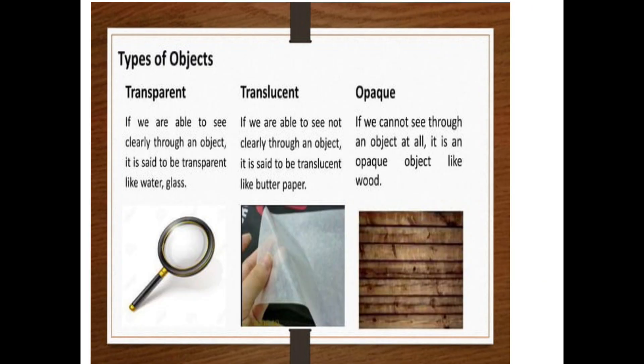Now types of objects which are present in our surroundings. They are further categorized as transparent, translucent, and opaque. What are transparent objects? If we are able to see clearly through an object, it is said to be transparent, like water, glass.